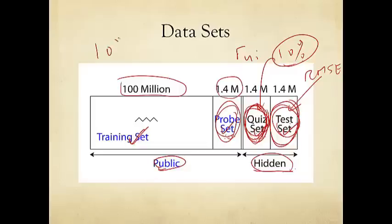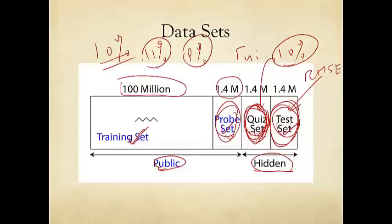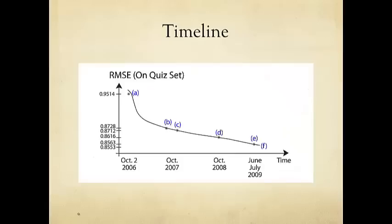You might wonder why 10% — why not 11%, why not 9%? Well, I don't know exactly how Netflix decided, but 10 is a good round number. Had it been 11%, it would have been a lot more challenging. As it happens, for this metric and this data set, getting to 11% would have been extremely difficult, and getting to 9% would have been a little too easy. It turned out to be a good pick — 10% — in hindsight. So what happened in the competition? It's a very interesting scientific story.